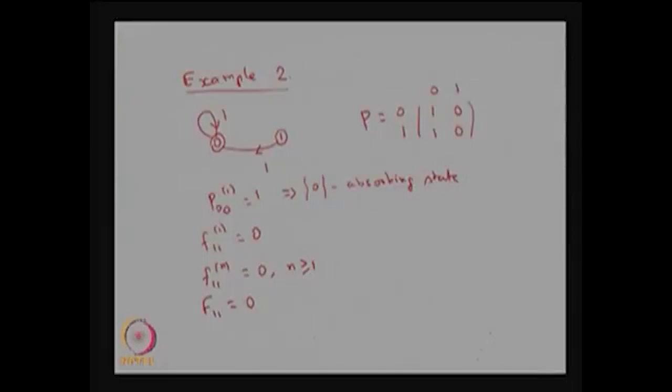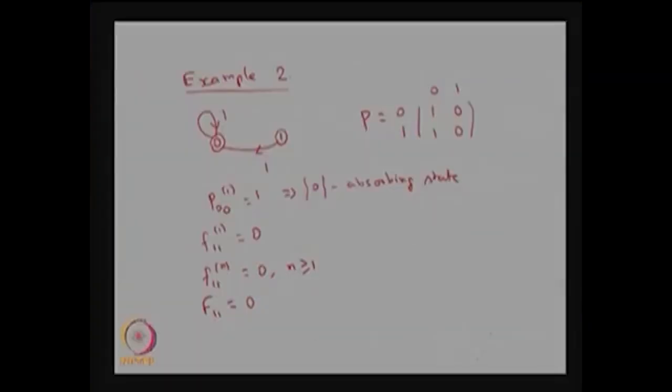Recalling how we classify states as recurrent or transient: if Fᵢᵢ = 1 the state is recurrent; if Fᵢᵢ < 1 (which includes Fᵢᵢ = 0) the state is transient. Our interest is whether the system returns to the same state with probability 1. Here, with probability 0 the system does not come back to state 1 if it starts from state 1. This conditional probability F₁₁ = 0 implies state 1 is a transient state.